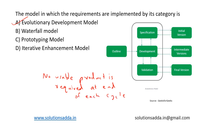In evolutionary development, requirements are implemented by category rather than priority. Evolutionary Development and Iterative Enhancement Model are somewhat interchangeable, but the major criteria is that requirements are implemented by category rather than priority. This model is used for projects using new technologies that are not well understood.